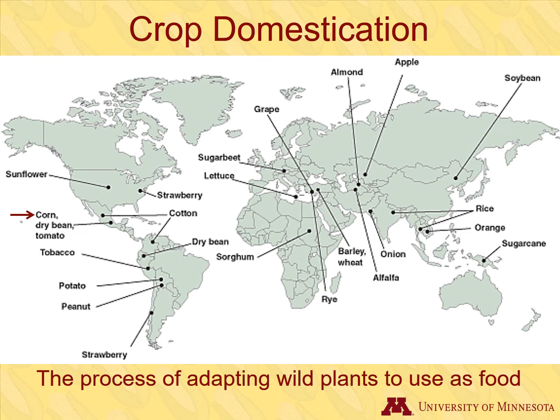Crop improvement started with crop domestication, the process of adapting wild plants for use as food. In the beginning, humans simply gathered wild plants for food and other uses. Over 10,000 years ago, humans started to cultivate and purposely grow certain wild plants. The process of domestication took place gradually and simultaneously occurred in many different regions around the world.